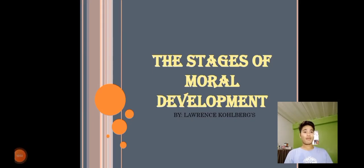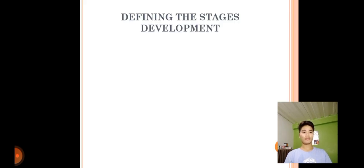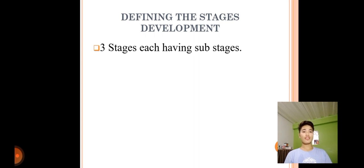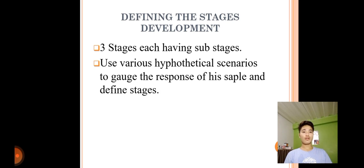Good day everyone, my name is Rexer Abapo and we will talk about the stages of moral development by Lawrence Kohlberg. Defining the stages of development: there are three levels, each having sub-stages. He used various hypothetical scenarios to gauge the response of his sample and define the stages. Last but not least is Heinz's dilemma.